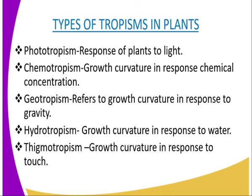Now I would like us to look at different types of tropism. The first type we are going to look at is phototropism. This word comes from the word photo, meaning light. So in simple terms, phototropism is a response of plants to light. The shoots are positively phototropic, while the roots show negative phototropism.